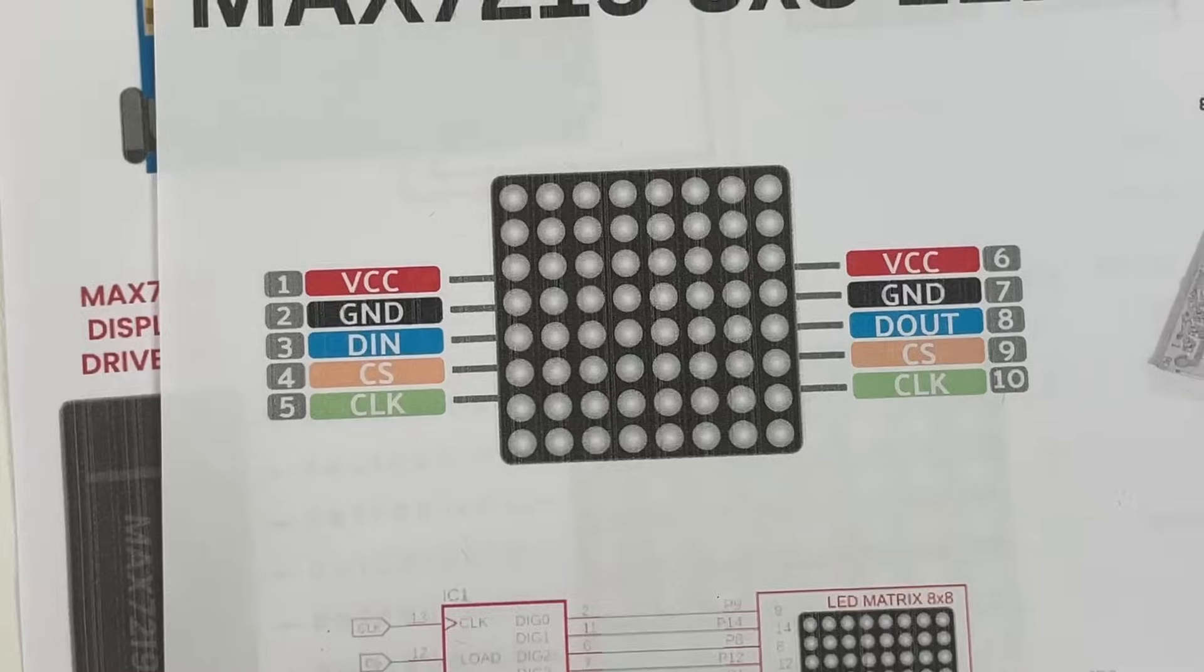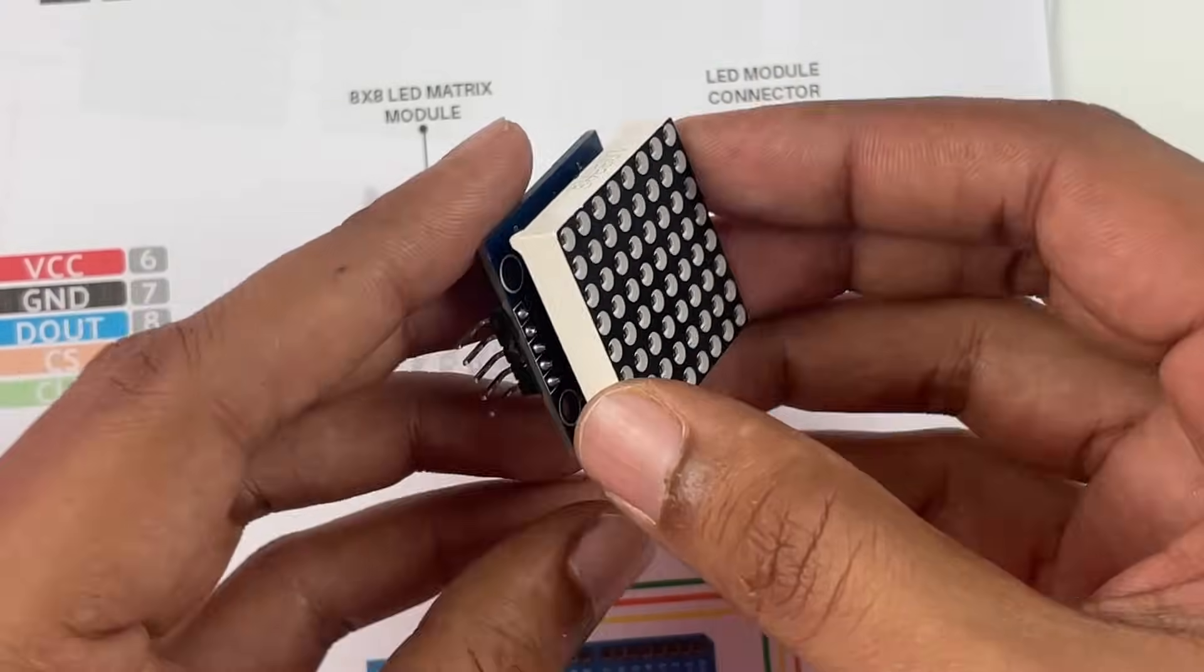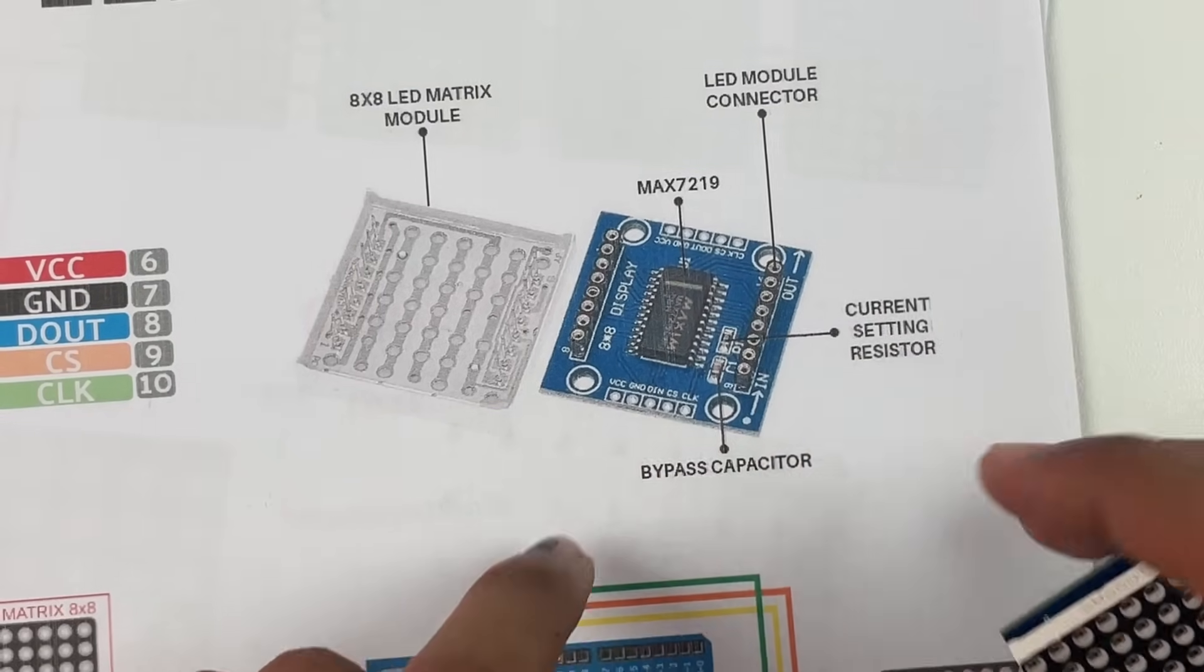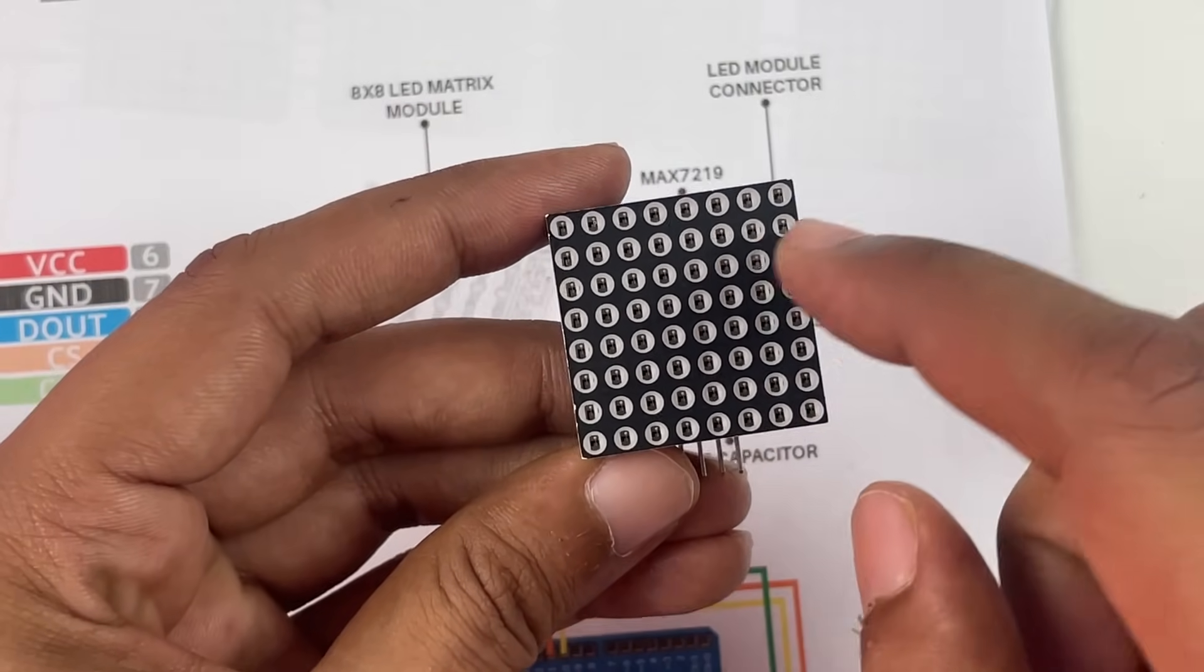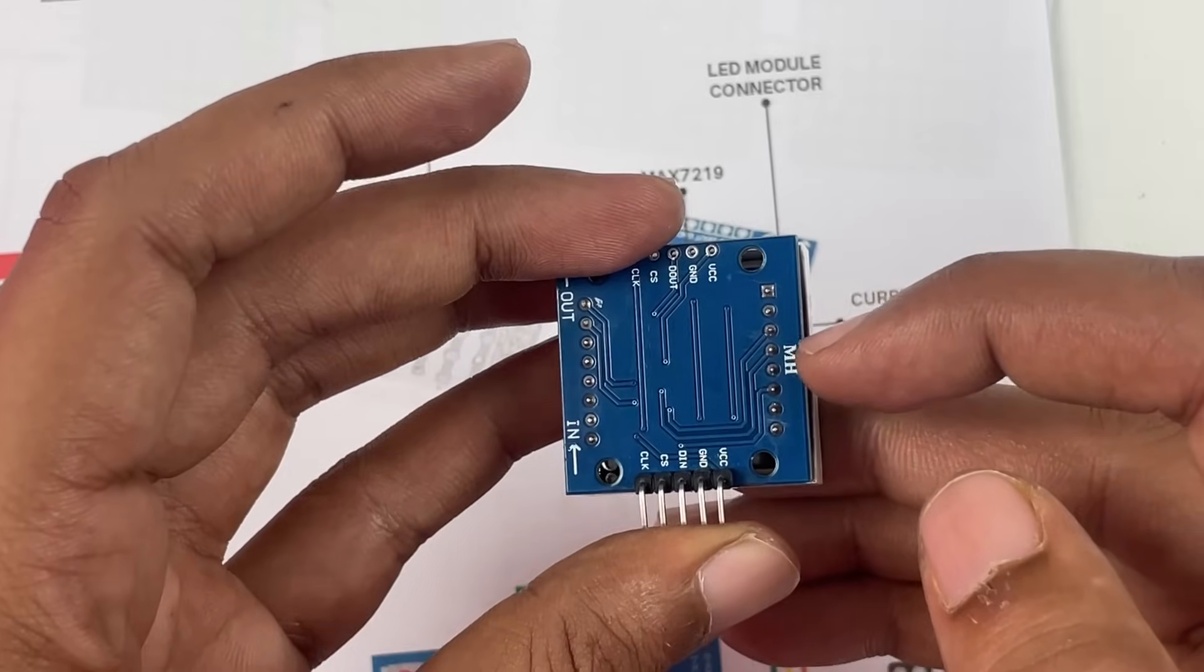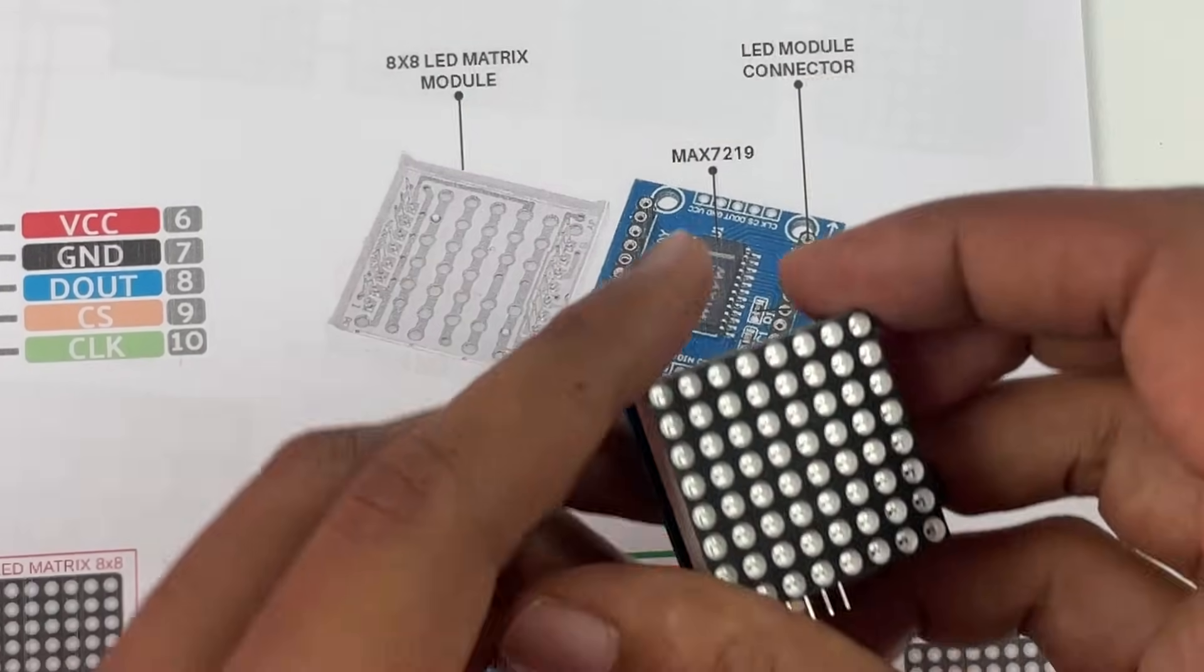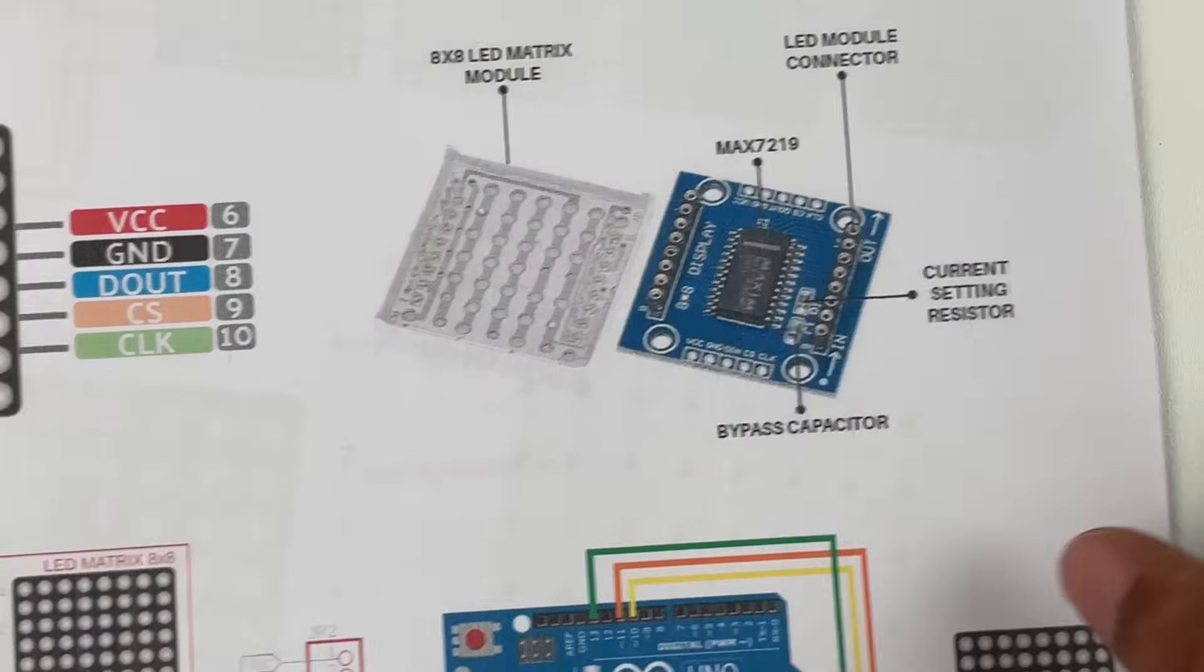To get a better understanding, we have shown the module as two parts. We have removed this display module separately and showed the board separately. The most important component on this board is the MAX7219 display driver IC. What you have to understand is this 8x8 matrix module has 64 LEDs, and as you can see there are just 16 pins being connected to this display driver IC. So how did we reduce these 64 LEDs into 16 pins?